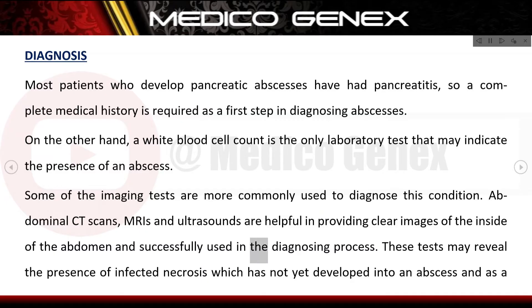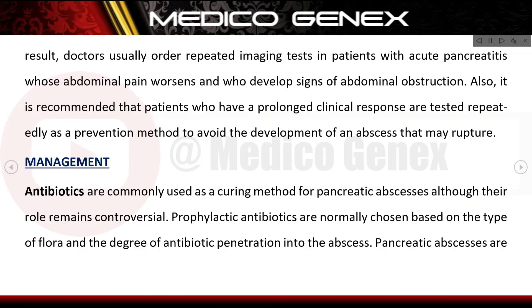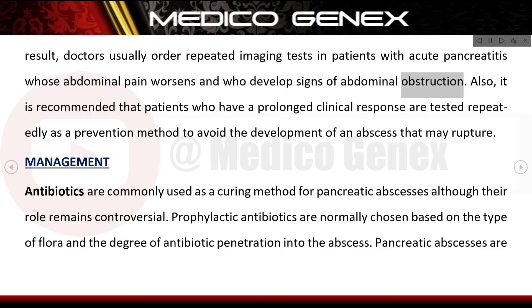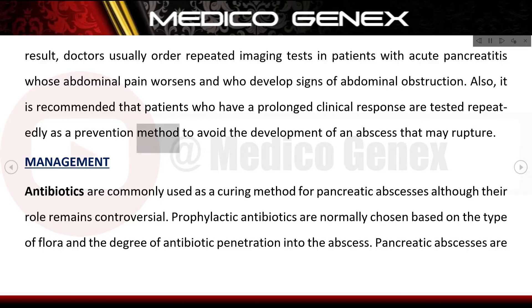Abdominal CT scans, MRIs, and ultrasounds are helpful in providing clear images of the inside of the abdomen. These tests may reveal the presence of infected necrosis which has not yet developed into an abscess. As a result, doctors usually order repeated imaging tests in patients with acute pancreatitis whose abdominal pain worsens and who develop signs of abdominal obstruction.